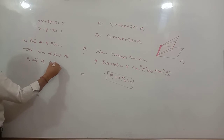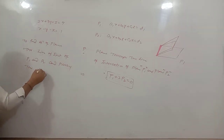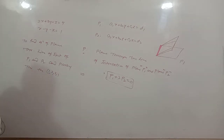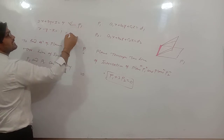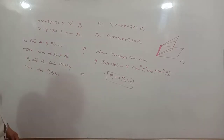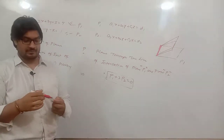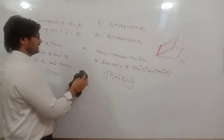And passing through the point 1, 2, 3. This means that any plane through the line of intersection of these two planes will pass through the given point. So we need to find the plane that passes through both the line of intersection and that specific point.